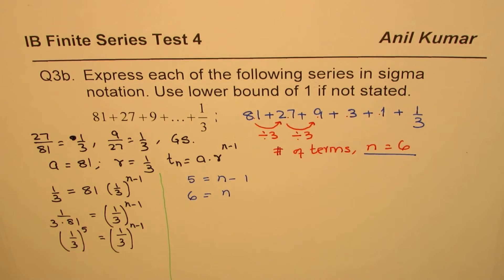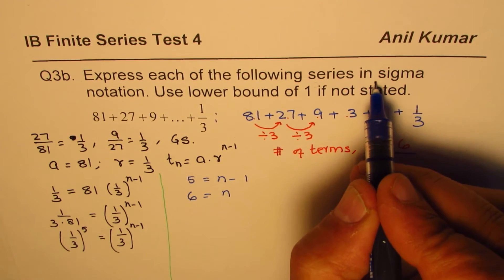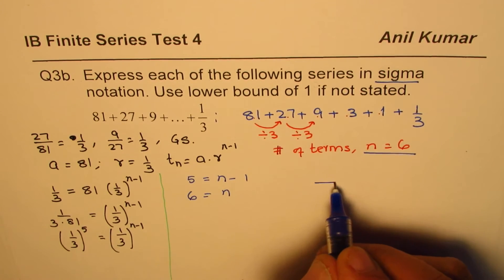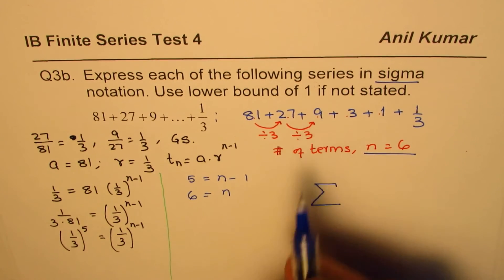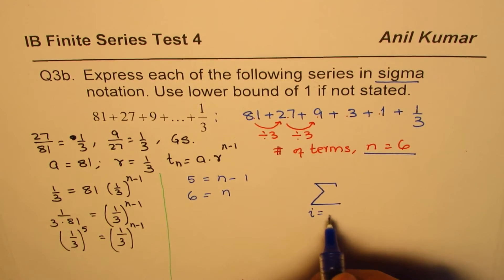Now, the question is how to write it in sigma notation. So sigma, as you remember, is this symbol. It is basically summation. We'll start with lower bound, i equals to 1. And we know n is 6.